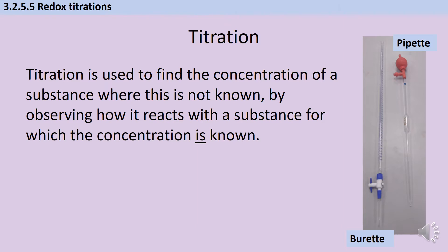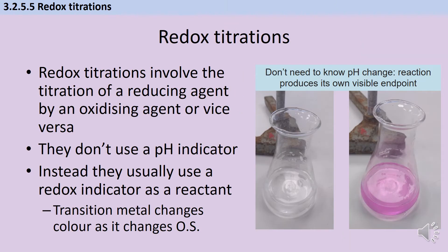You'll have done quite a lot of acid-base titration in year 12 chemistry, and depending on where you are in physical chemistry you might also have looked at titrations with weak acids and weak bases in year 13. You should be familiar with the apparatus and know how to use a burette and a volumetric pipette. In terms of setting up a redox titration and doing the calculations, there's very little that's actually different to an acid-base titration.